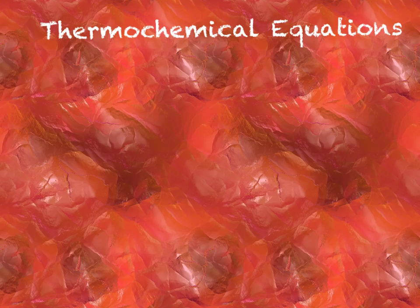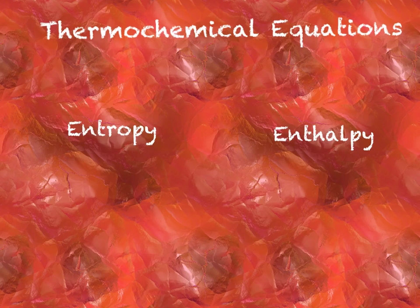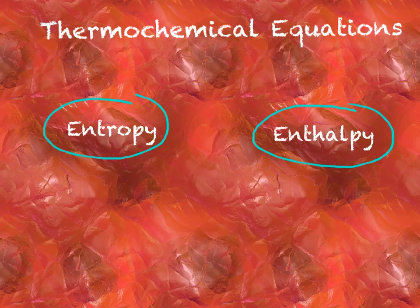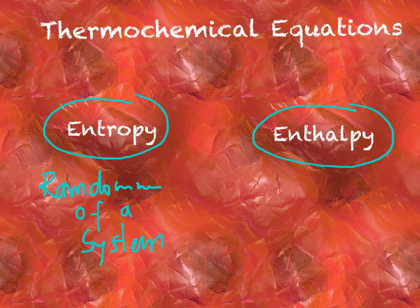Before we go into more detail, we need to clarify a couple of basic concepts: entropy and enthalpy. Entropy is found in textbooks as the randomness of a system — I prefer to call it chaos. The more chaotic, the more entropy. And enthalpy talks about the energy content of a system.